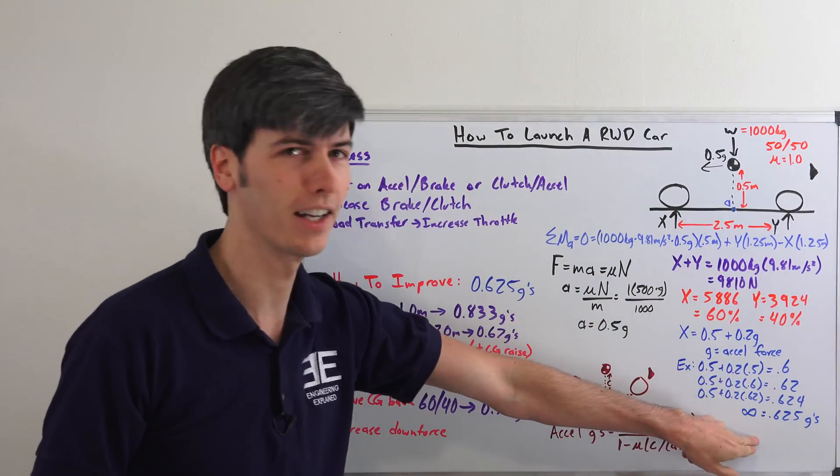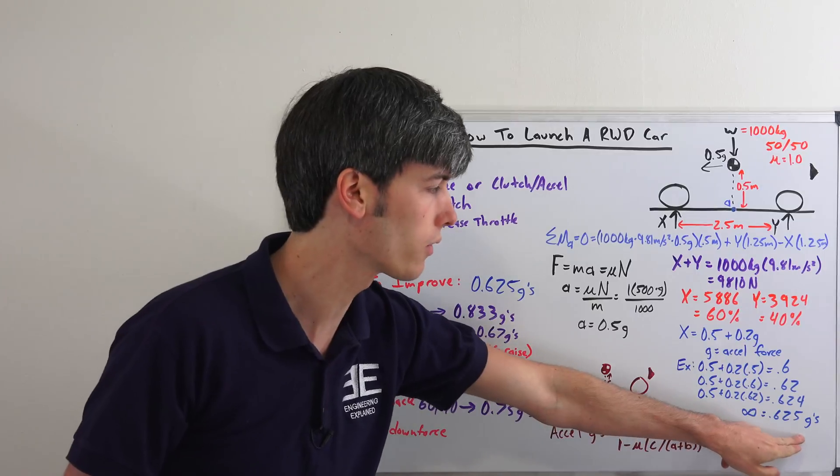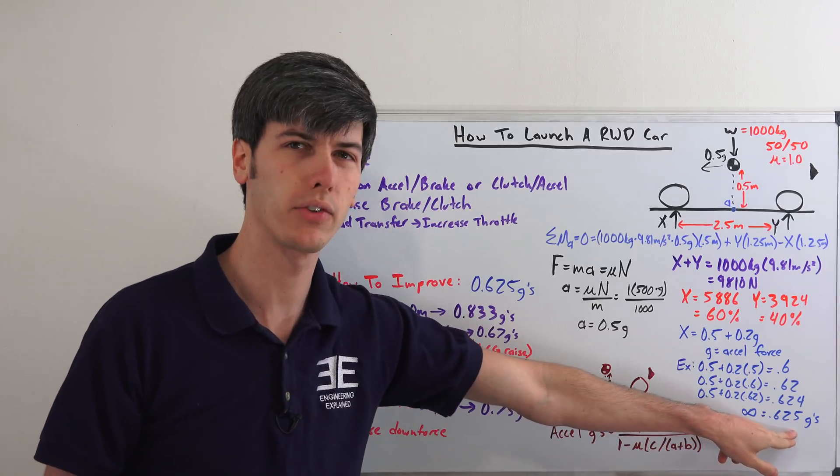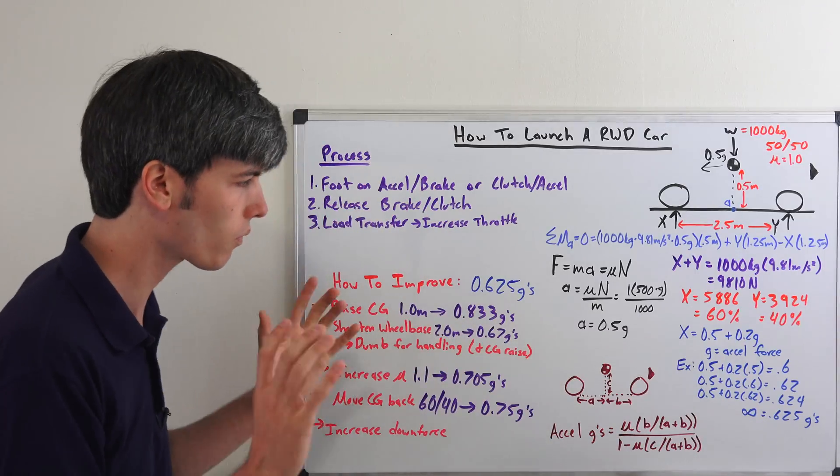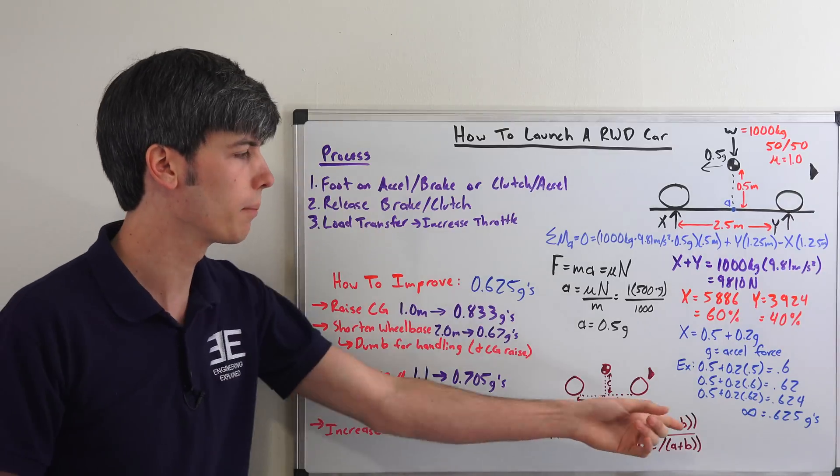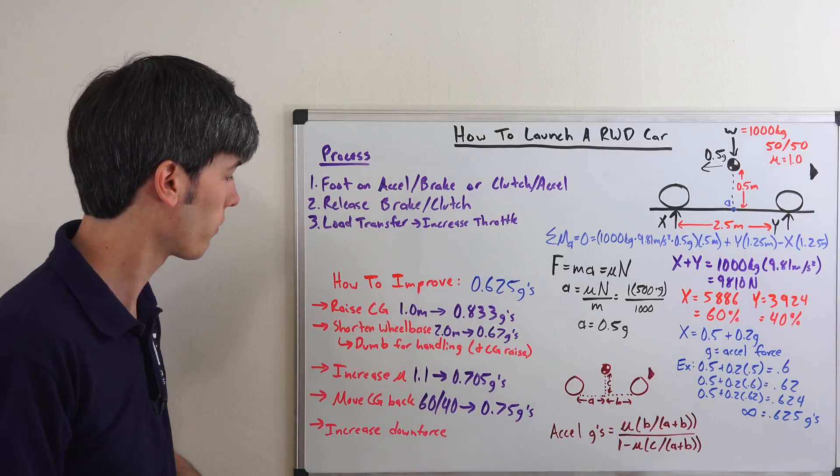Okay, great. But this number isn't all that high. I mean there are cars today, even rear-wheel drive cars, which can accelerate much faster than 0.625 g's. So, how do they do it? Well, the way you can improve this, there's several ways here.